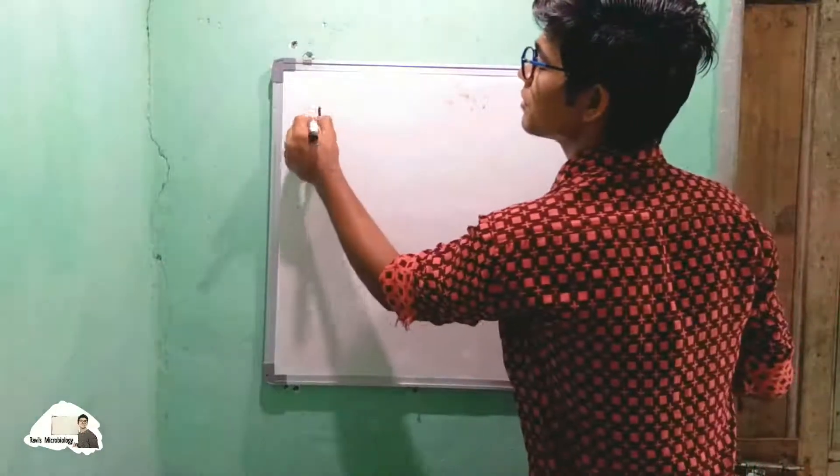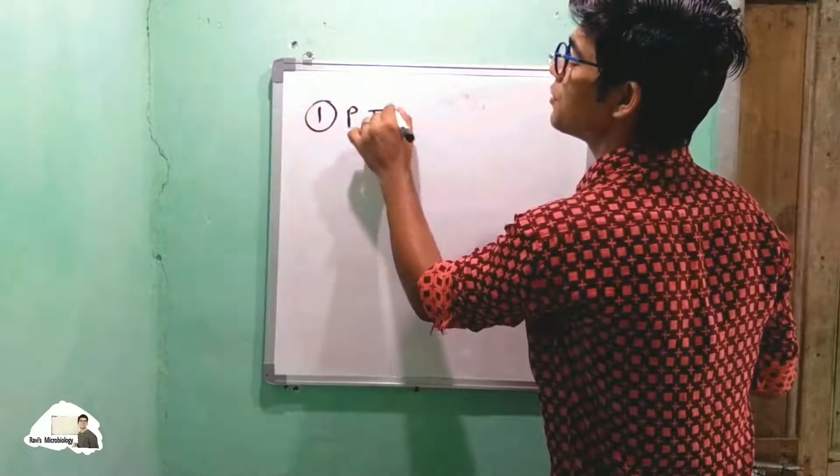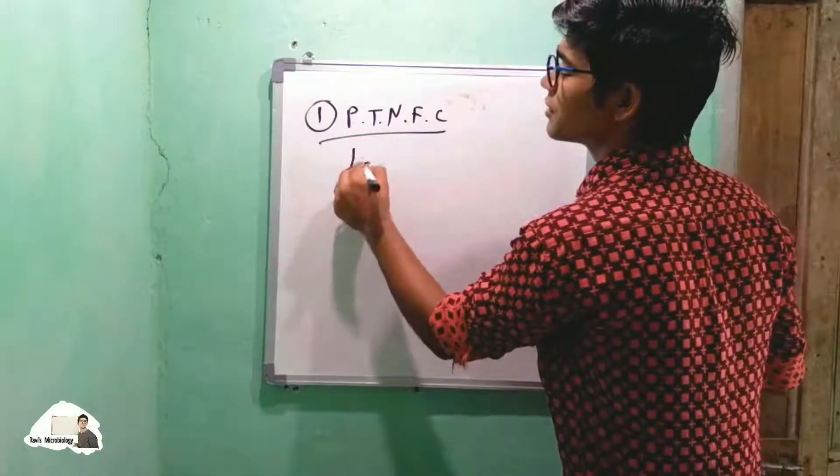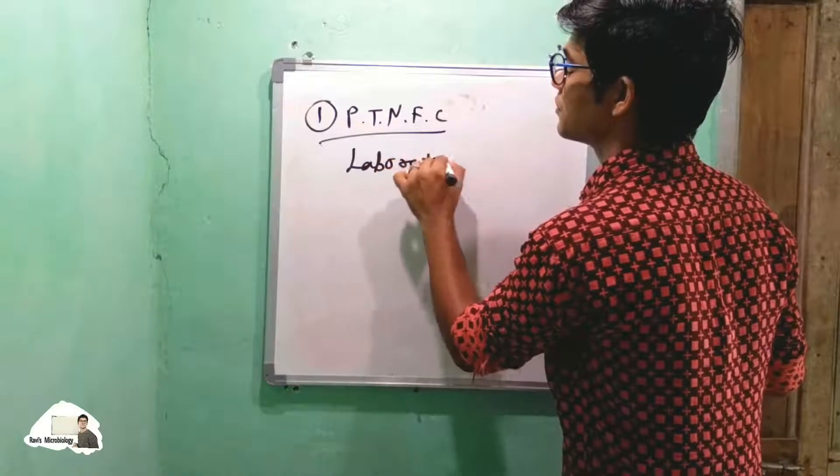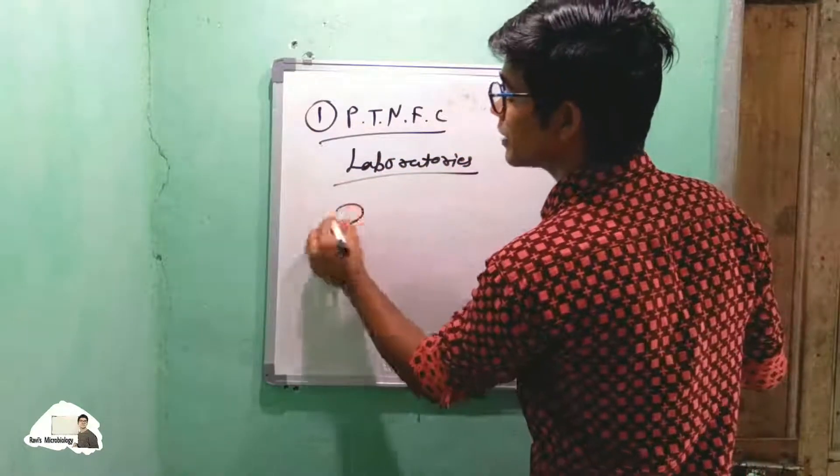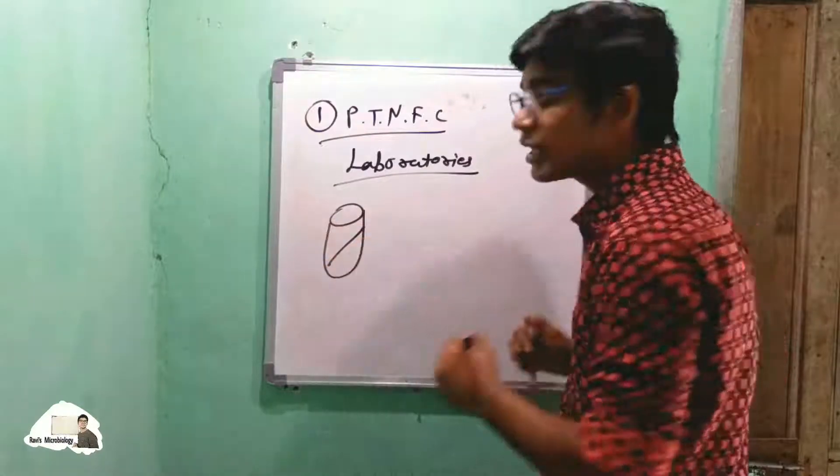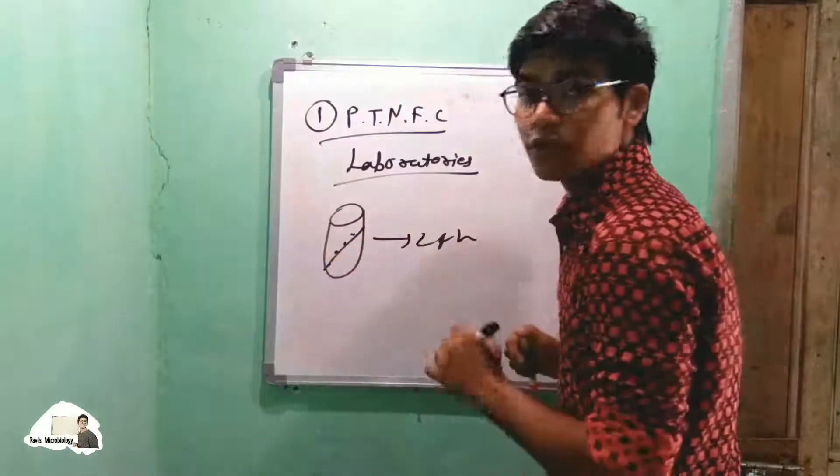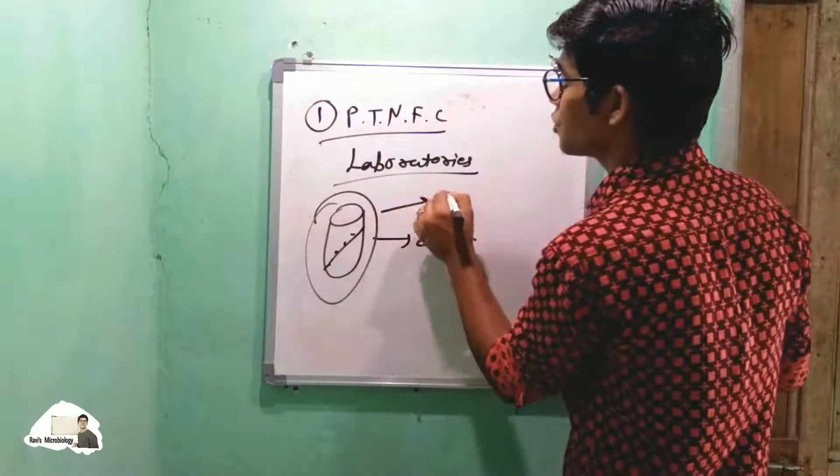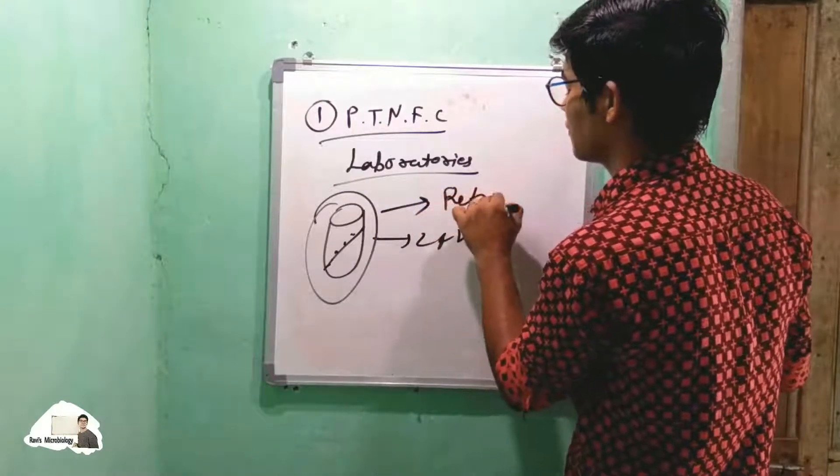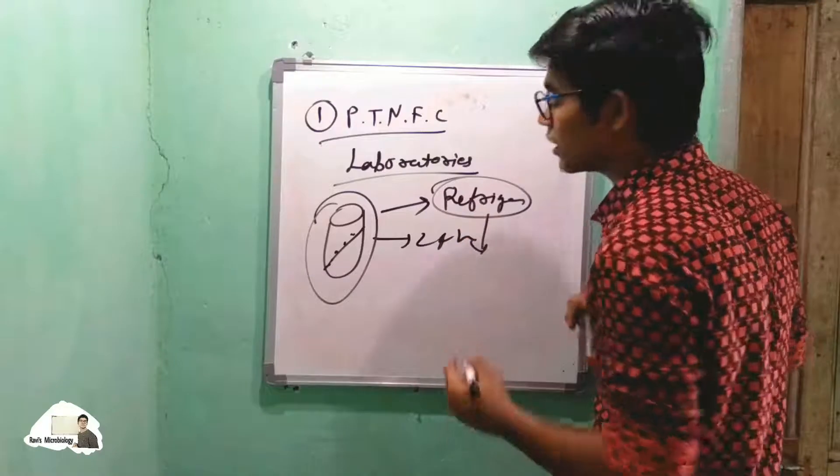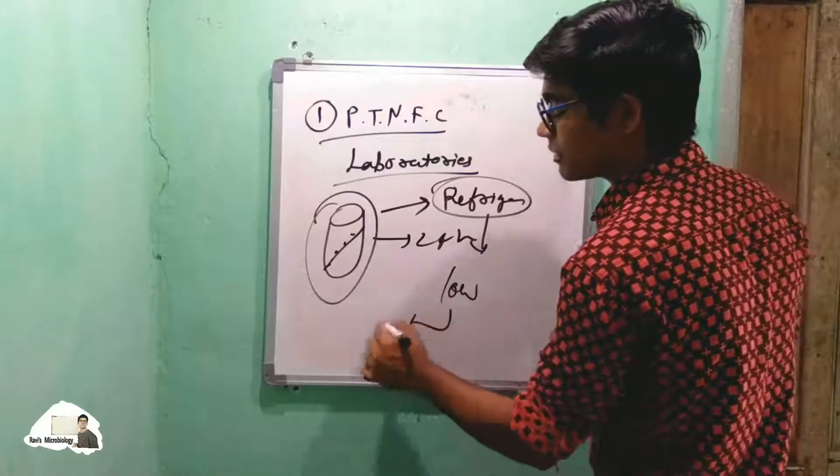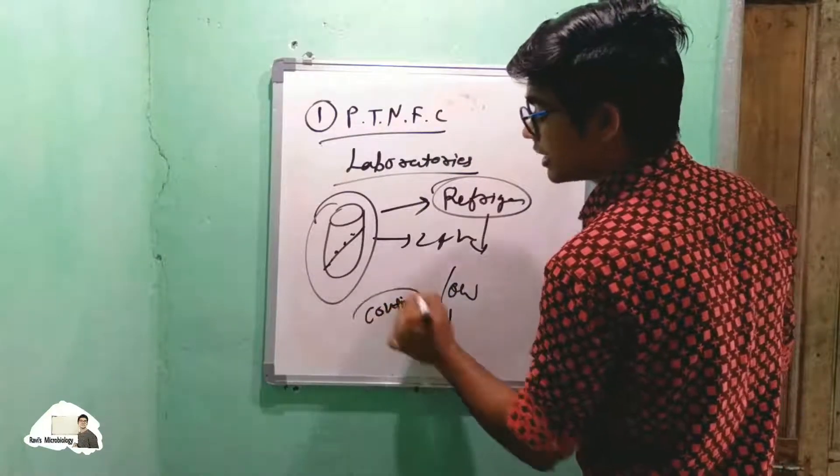The first method, periodic transfer into new fresh culture, is commonly used in all microbiology laboratories. They grow organisms on agar slants for 24 hours. After getting a well-isolated colony, the slant is stored in a refrigerator. In refrigerator cooling, the organism growth rate goes very low and the metabolism continues, so they keep alive.